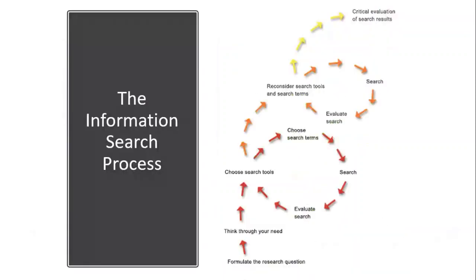What is the information search process? This diagram highlights different steps you might go through during your research or information search: getting background information, formulating your research question, thinking through your needs, searching using proper tools and relevant search terms, conducting searches, evaluating the output of your database research, and then reconsidering other search tools and terms.